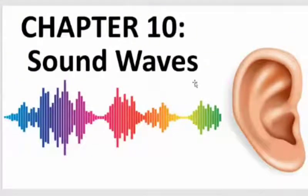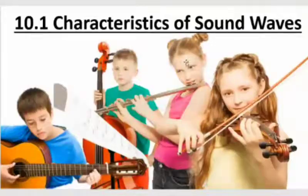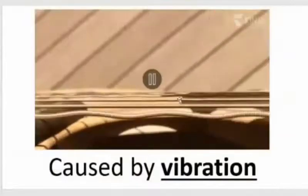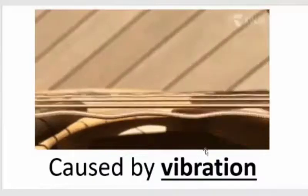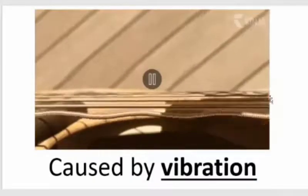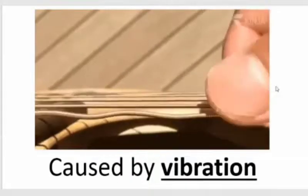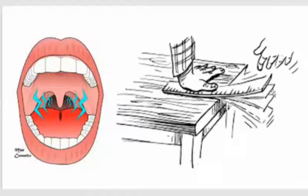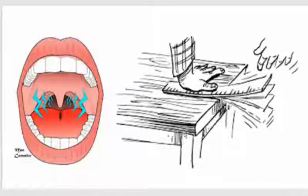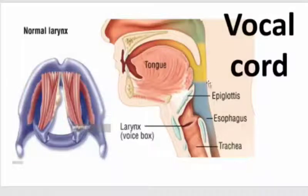Chapter 10: Sound Waves. The characteristic of sound waves. Sound is caused by vibration. There are many sources of vibration — the vocal cord, or anything that you move repeatedly can cause vibration and produce sound.